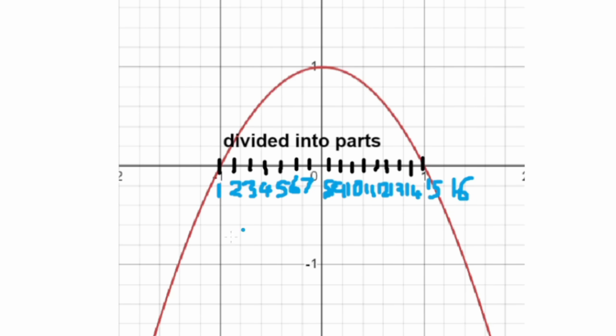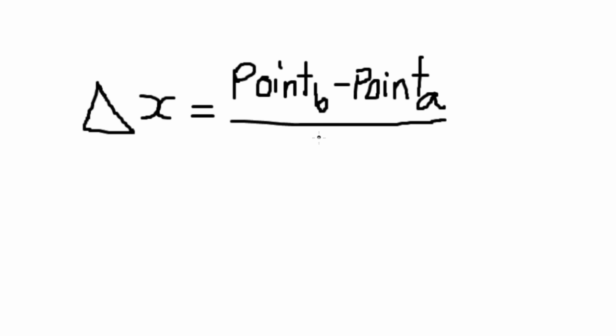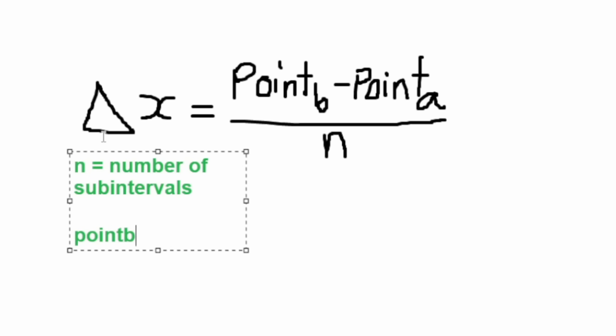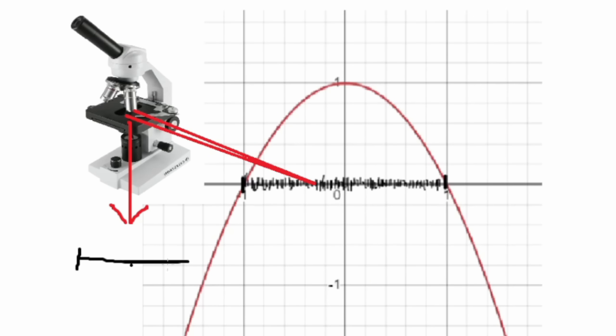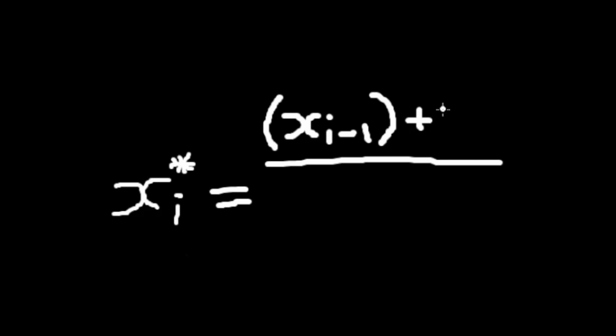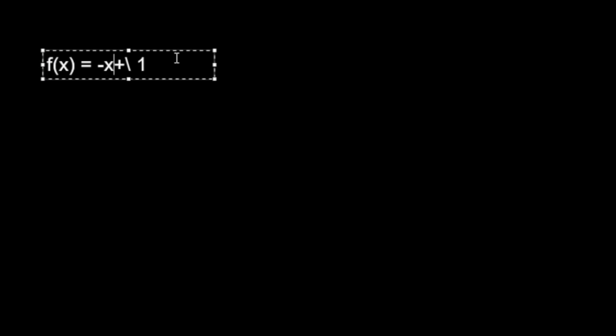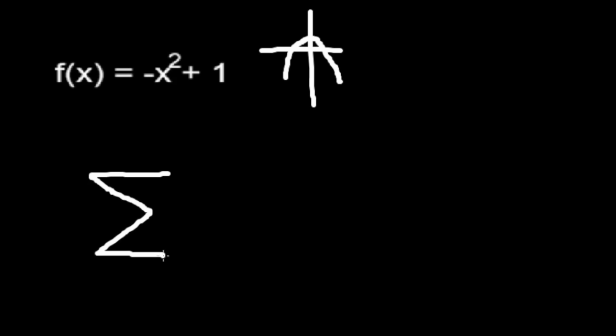The more parts you divide it into, the more accurate the area will be. Let's say you divide it into 100 subsections, or subintervals. So delta x equals point B minus point A divided by N, where N is 100 and point B is the greatest number out of the two points. Now we have to have a value within these subintervals that we use to calculate width. Most commonly this is the midpoint. The midpoint for a given subinterval is equal to x-sub-(i minus 1) plus x-sub-i divided by 2, where the x-sub-i values are the left and right points of the subinterval. We plug this value along with our original subinterval calculator into this sum.